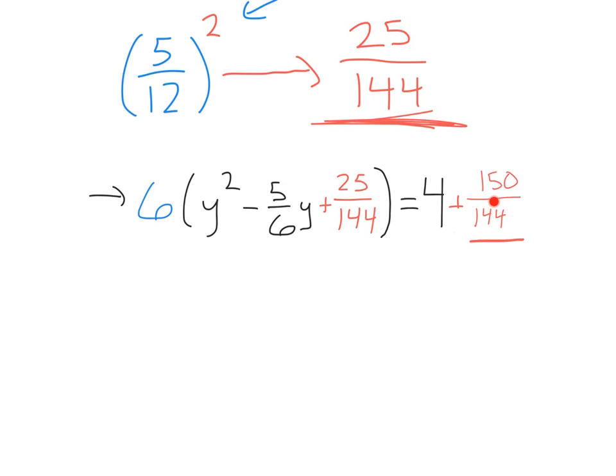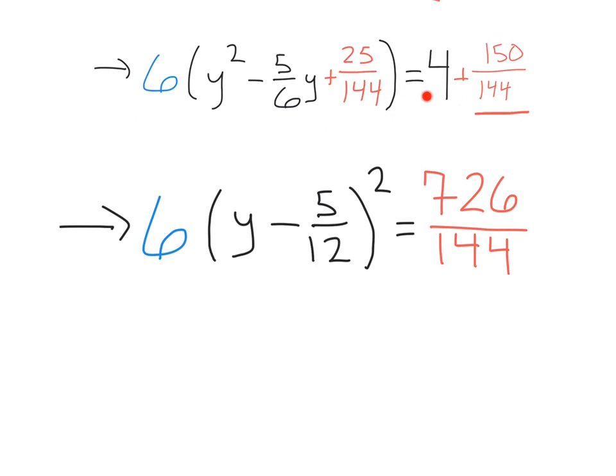Alright, keep on pushing through. I know fractions can get messy, but we know how to deal with them. Getting common denominators here. 4 over 1 is the same as times 144 over 144. Adding those together, we get equal to 726 over 144.